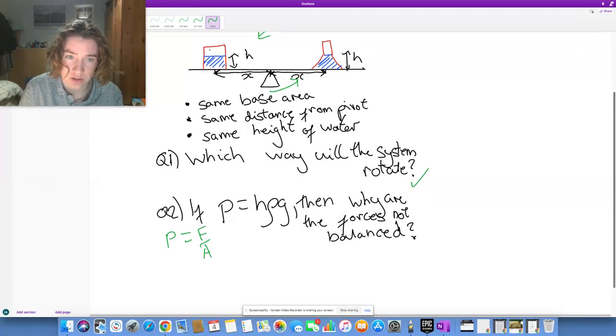then since the pressures are the same because it's the same height of liquid, and they have the same base area, surely the forces should be equal because the height is the same, the density of the liquid is the same, the gravitational field strength is the same, and the area of the bottom is the same, and the displacement from the pivot is the same. So surely they should stay at equilibrium?